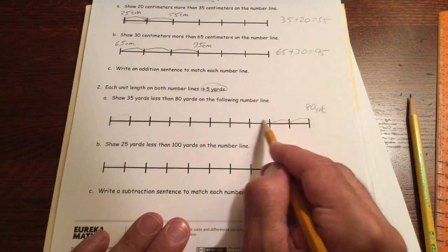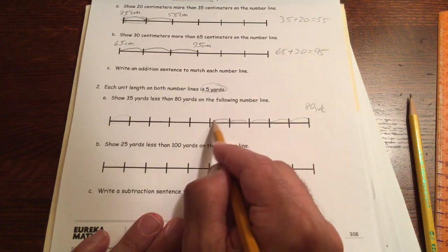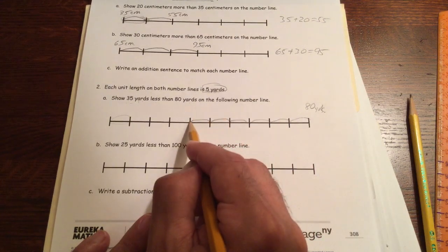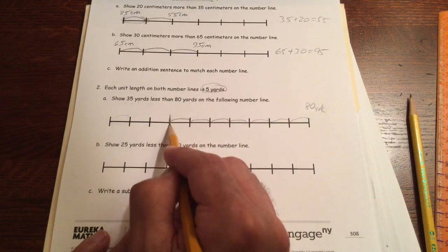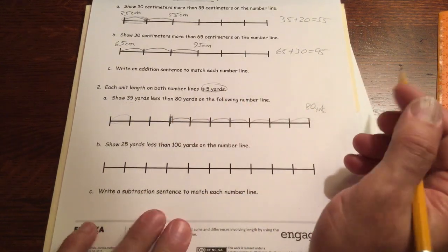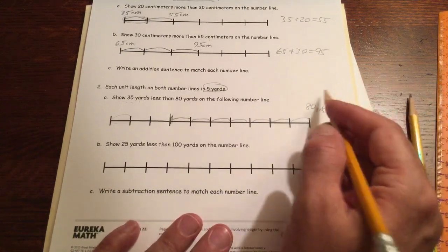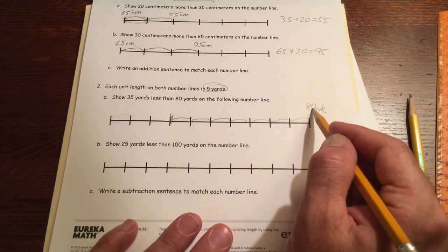5, 10, 15, 20, 25, 30, 35, right there. If you know 80, you subtract 35, you can just count backwards by fives, too.